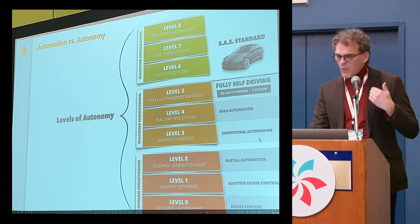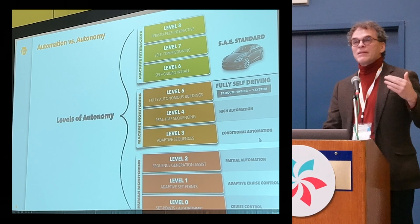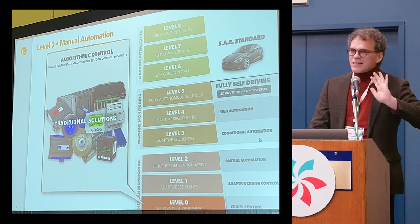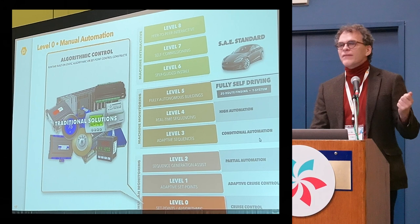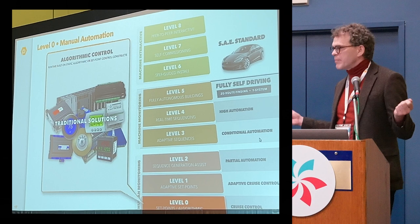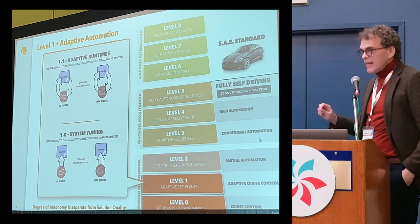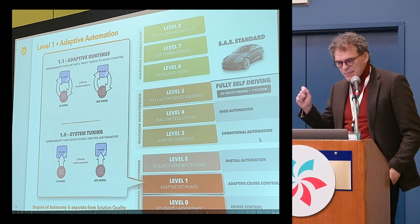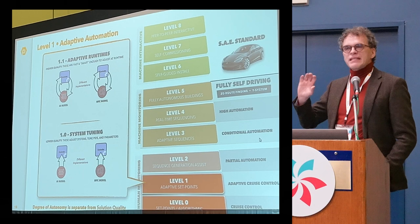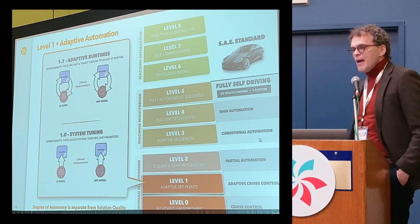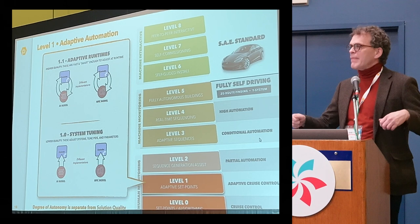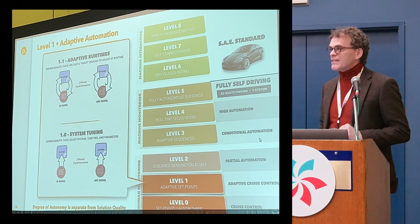Autonomous buildings — why is that important? Levels of autonomy don't mean the same thing as automation. Automation as we know today — what's existed for the last 100 years — is what we call algorithmic control. This level-zero autonomy is equivalent to cruise control in your car; both things are probably using the exact same methodology, which is called PID. Most things we see in the AI utility space in buildings today are what we call adaptive runtimes or adaptive tuning. You still have the same control systems, probably based on PID, but with optimizers working over hours or months to tweak and tune them.